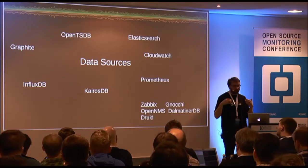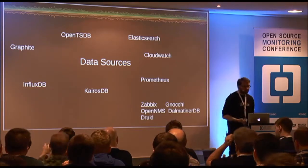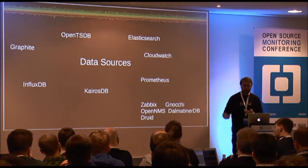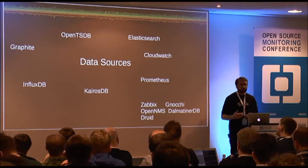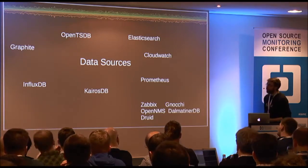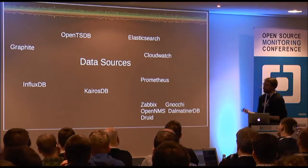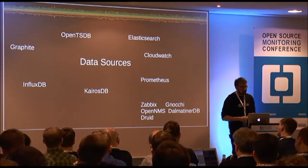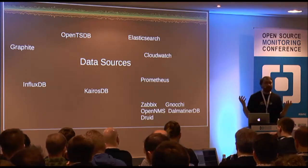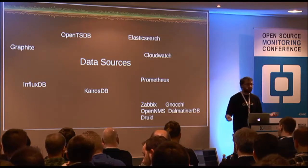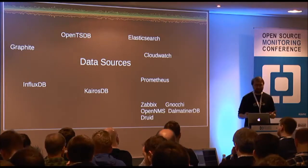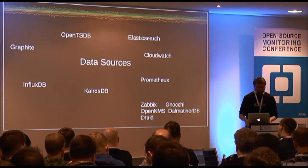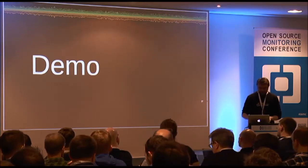When Grafana was released it originally targeted only Graphite, but since then I added a plugin abstraction and a number of other data sources — either as core supported data sources or external plugins. The latest release supports Graphite, OpenTSDB, Elasticsearch, CloudWatch, InfluxDB, and Prometheus, which is gaining a lot of popularity. The time series database space is really blooming — new databases are being announced almost every week.